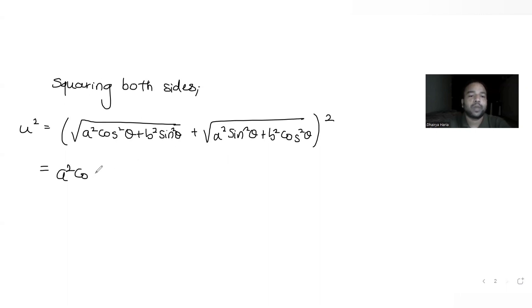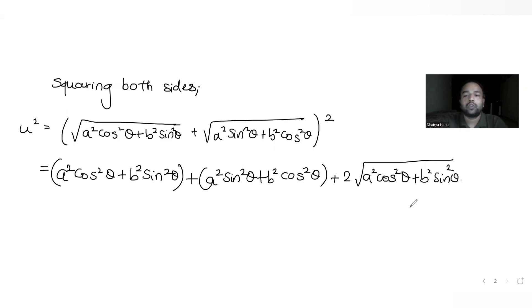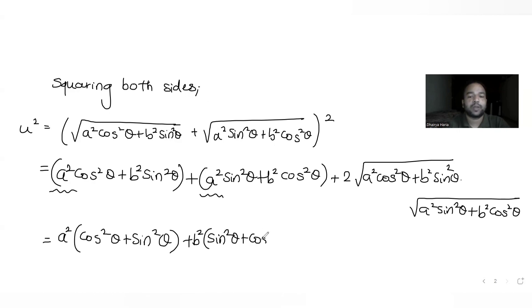That gives you: a square cos square theta plus b square sin square theta, plus a square sin square theta plus b square cos square theta, plus 2 times a into b. Where a is root of (a square cos square theta plus b square sin square theta), and b is root of (a square sin square theta plus b square cos square). Taking a square common, you get a square times (cos square theta plus sin square theta) plus b square times (sin square theta plus cos square theta), plus these cross terms.